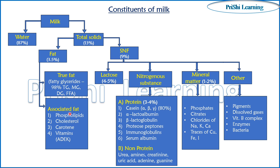Associated fat is fat that can be found associated with other compounds. For example, phospholipids — phosphorus and lipids found together in fat. Then cholesterol, carotene, and vitamins. The fat-soluble vitamins are part of the associated fat.